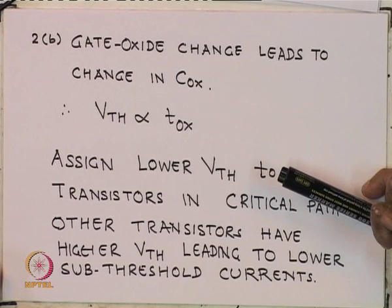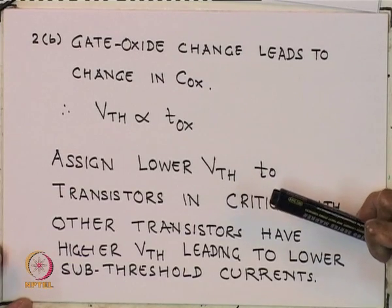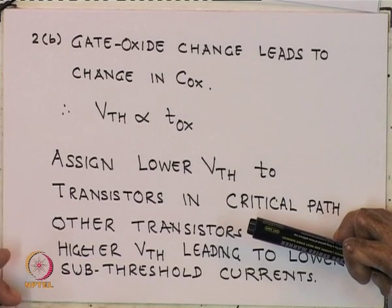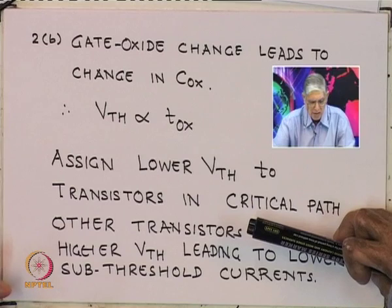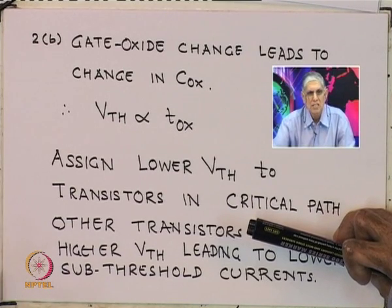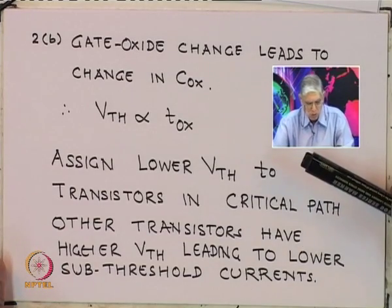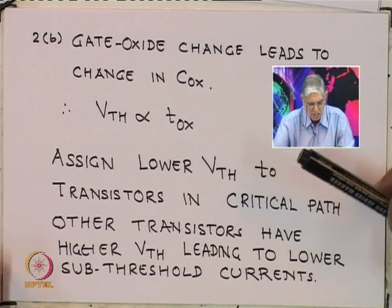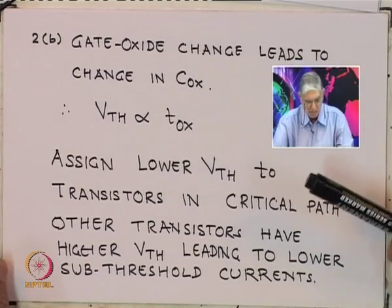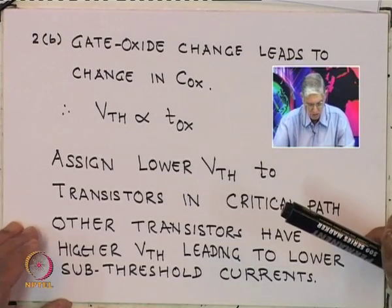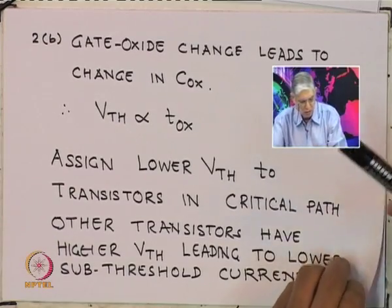Threshold voltage can also be changed by varying Cox. Since Cox = εox/tox, Vth is proportional to tox. Transistors with larger gate oxide thickness have larger thresholds; thinner oxide gives smaller thresholds. Note that high-k dielectrics have larger εox, so tox can be proportionally increased to maintain the same Cox effect. The design strategy remains the same: assign lower threshold to critical-path transistors for speed, and higher threshold to non-critical-path transistors for lower leakage.